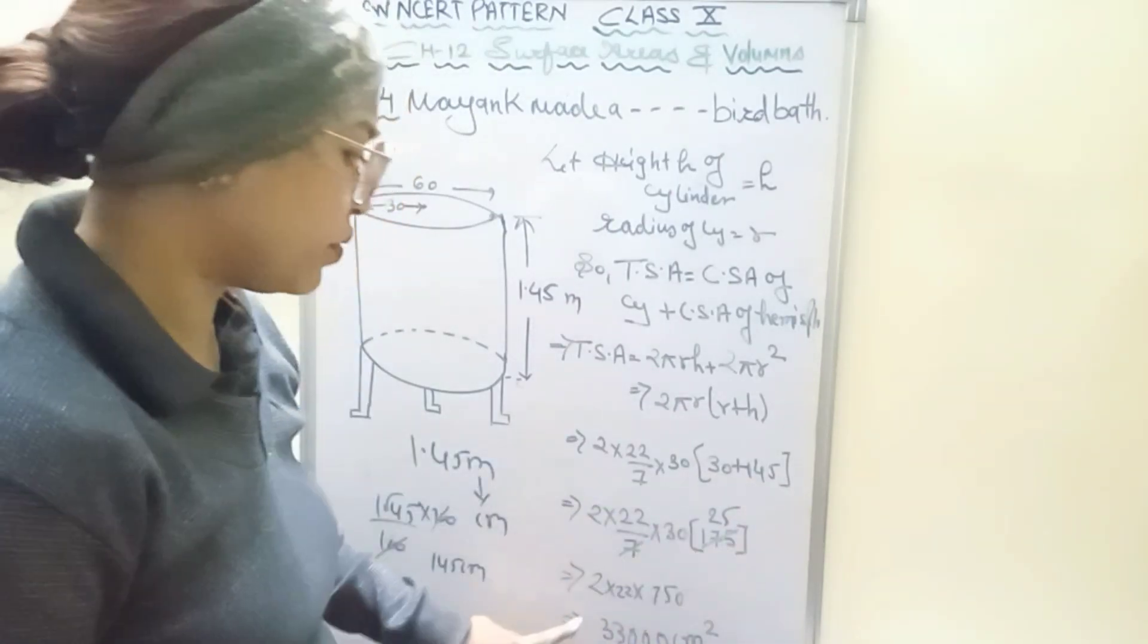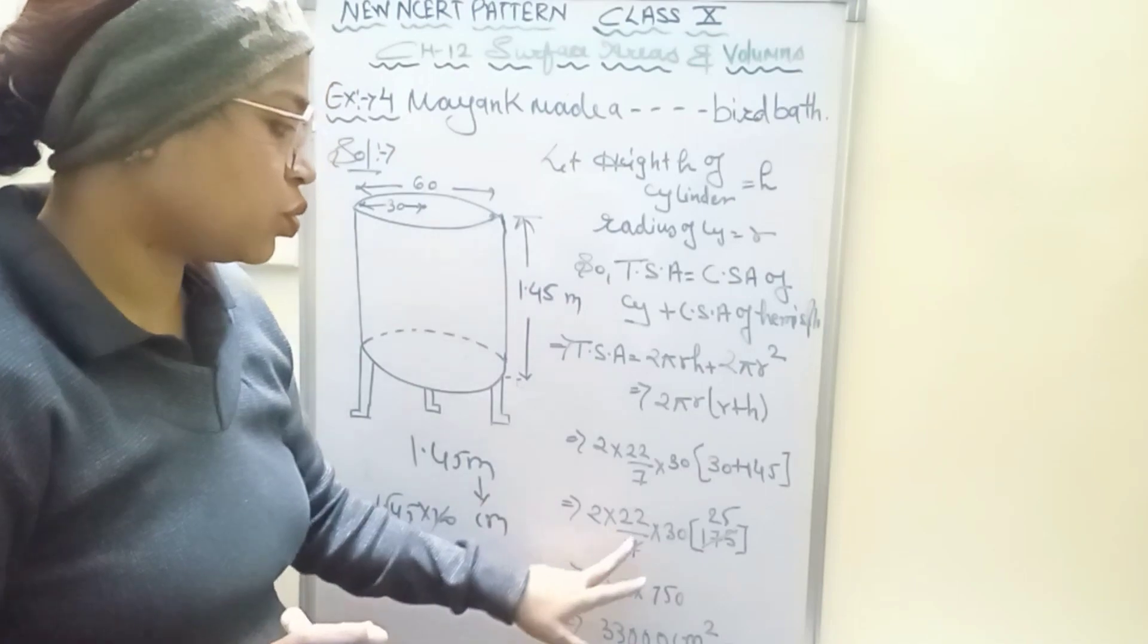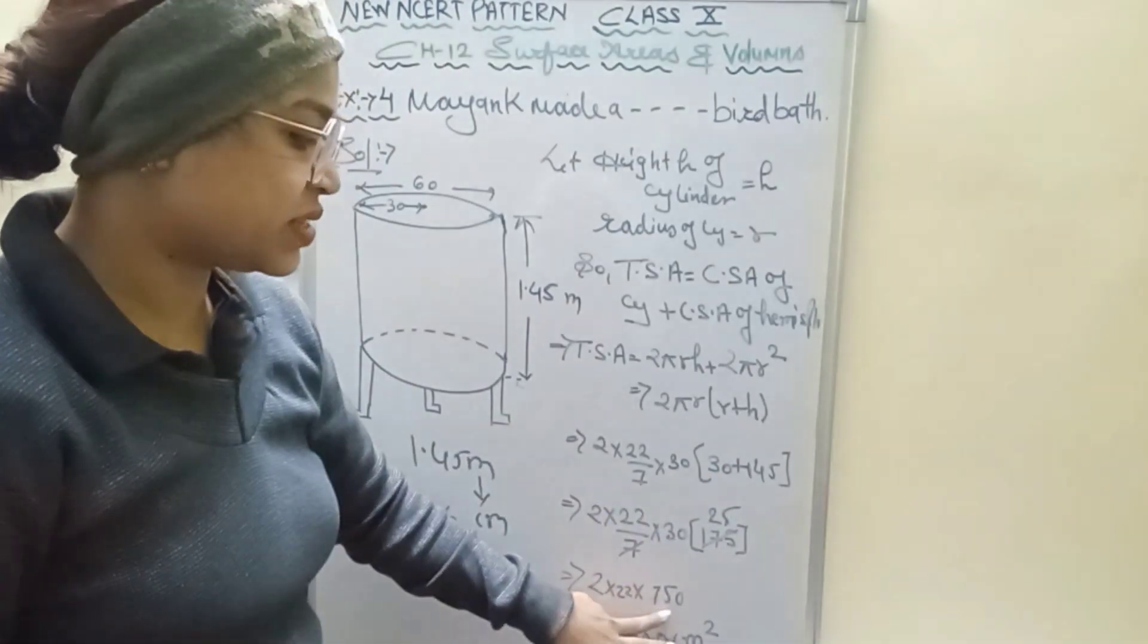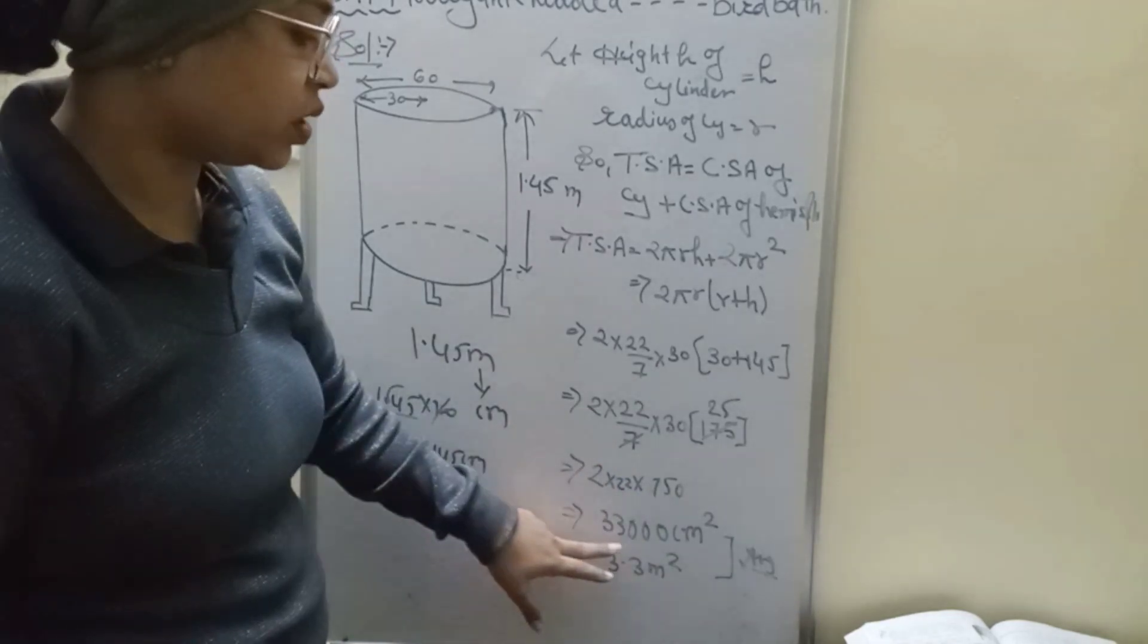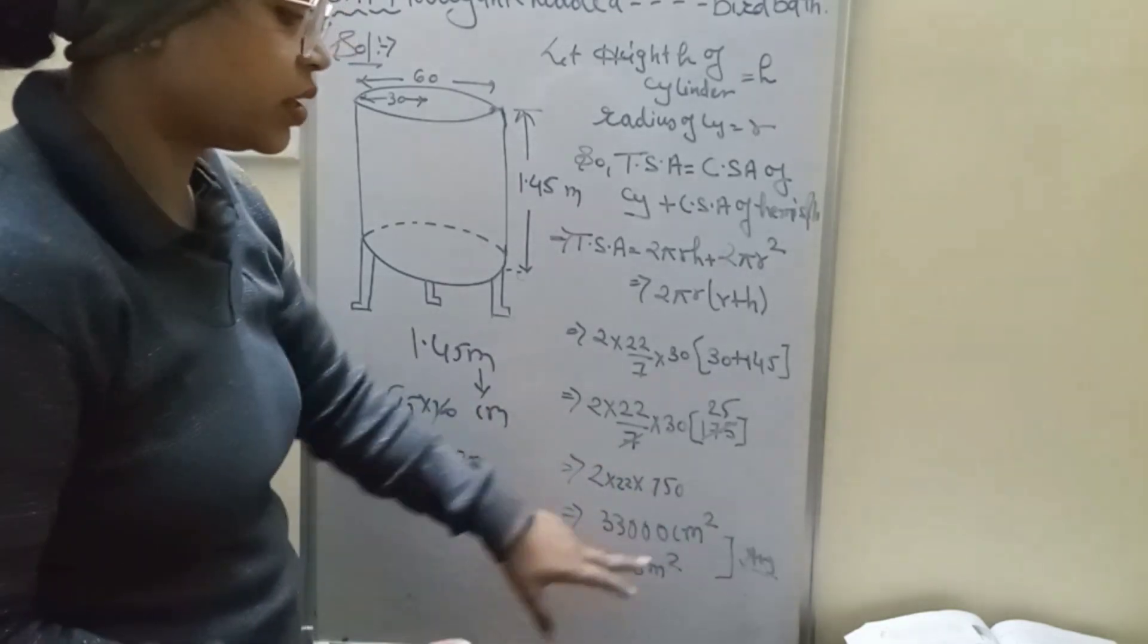So the value is 2 and 22 as it is, 30 and 25 multiply to get 750. So the complete value is multiplication: 33,000 centimeters squared. Converting centimeters to meters, we get 3.3 meters squared.